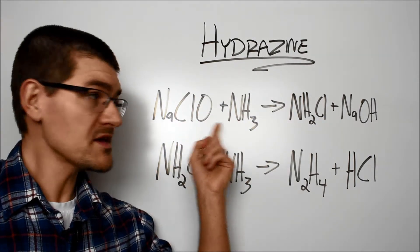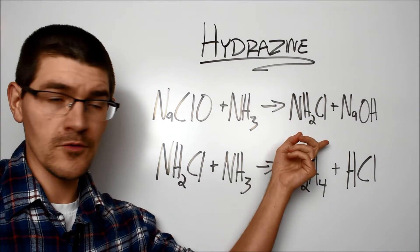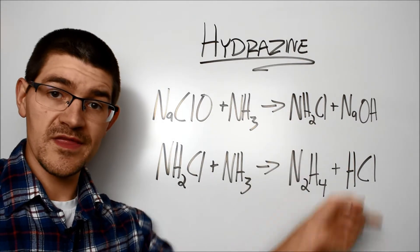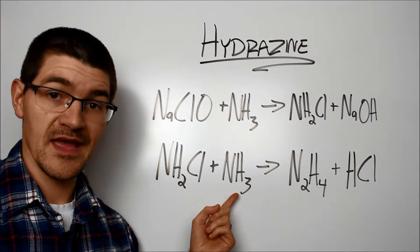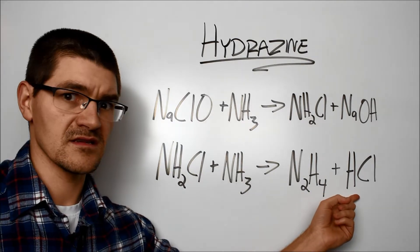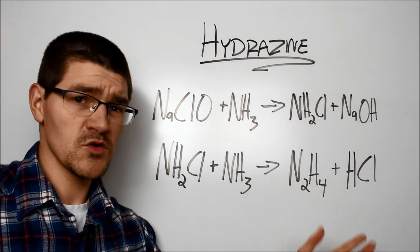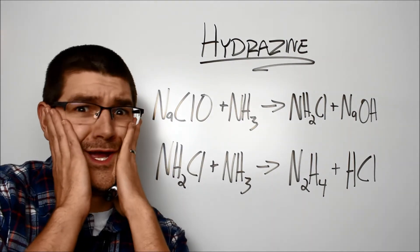We take our sodium hypochlorite bleach and our ammonia and we get our friend monochloramine plus sodium hydroxide. We then take the monochloramine and react it with an excess of ammonia and get hydrazine and hydrochloric acid. Well, geez, those look like two bad reagents, so what are we going to do?